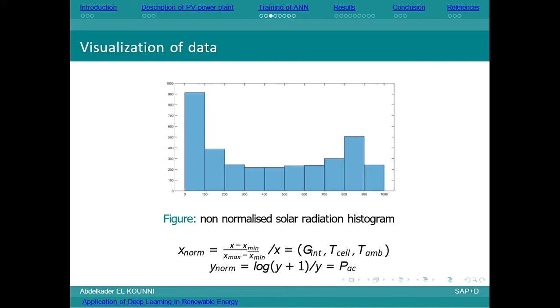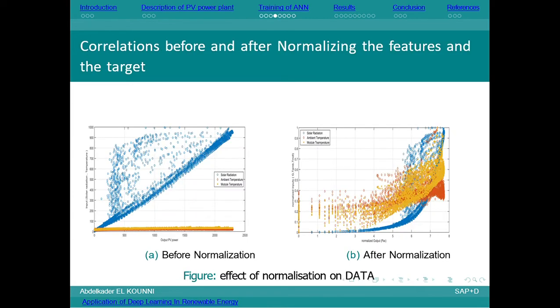The output was transformed using a log transformation to reduce its variance and make it in a smaller range. This shows the correlation of the independent variables—each one has its own correlation with the output. The figure shows the influence of normalization on the variables. As you can see, they are all ranging from zero to one.